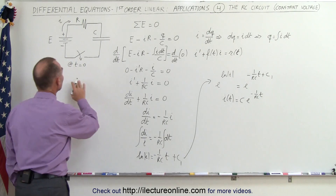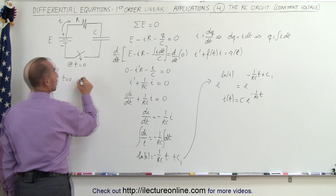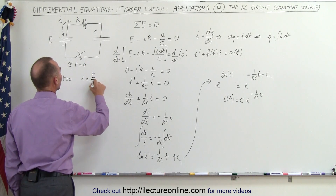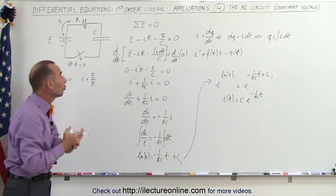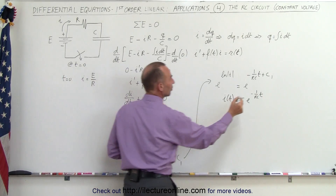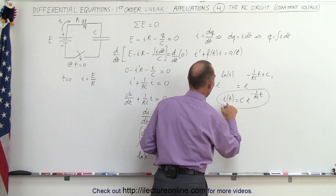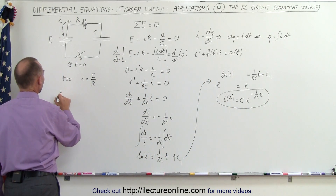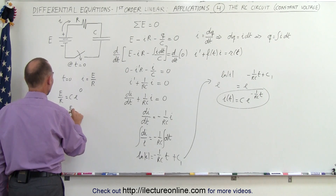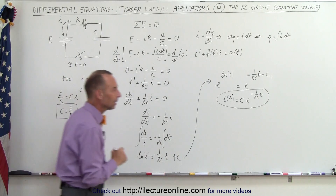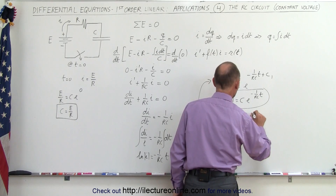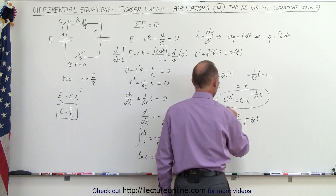Now we need to find what C is equal to using initial conditions. At time equals zero, I would equal the voltage divided by the resistance using Ohm's law, because current begins to flow immediately — there's no charge on the capacitor when we first close the switch, so we have full current E divided by R. Plugging t equals zero into the equation, E/R equals C times e to the zero power, which is one, so C equals E over R.